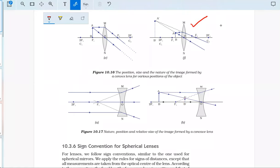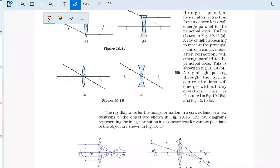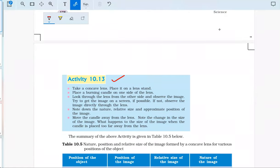What does this activity say? That the image formed in a concave lens is always diminished and virtual. It can never be taken on a screen. This is activity 10.13.